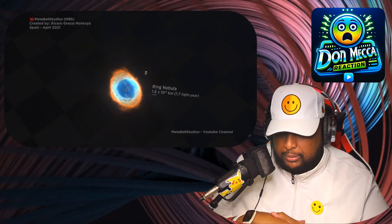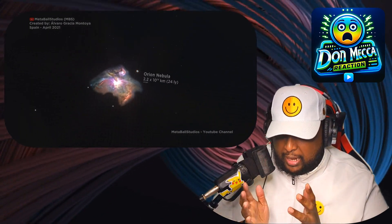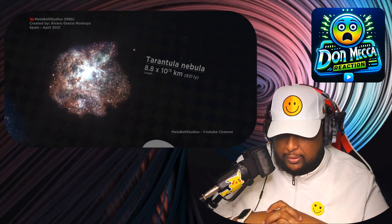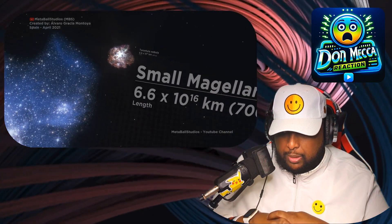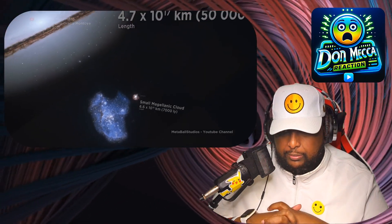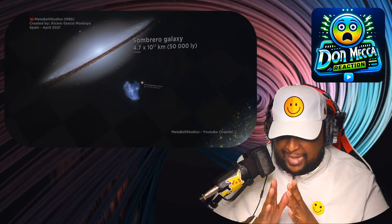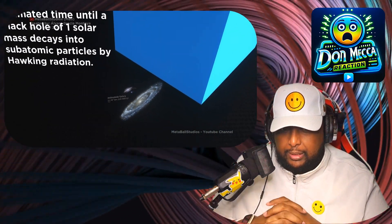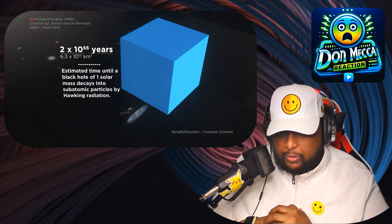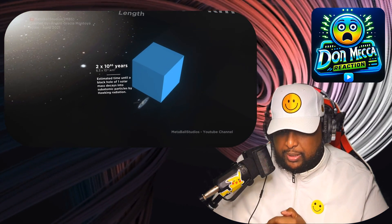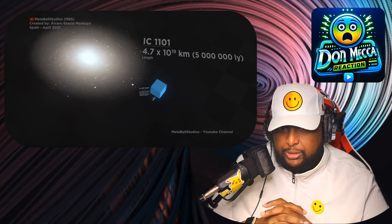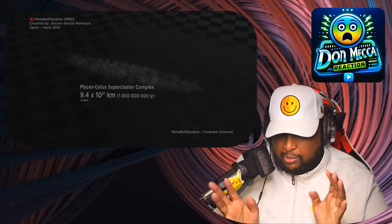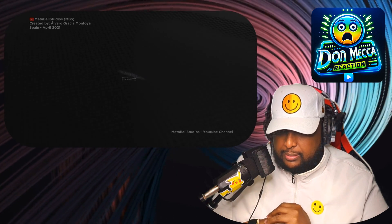Ring Nebula, Orion Nebula. Tarantula Nebula, okay. Small Magellanic Cloud. Sombrero Galaxy. Andromeda Galaxy. Estimated time until a black hole of one solar mass decays into subatomic particles by Hawking radiation. Oh wow. It's getting crazy.